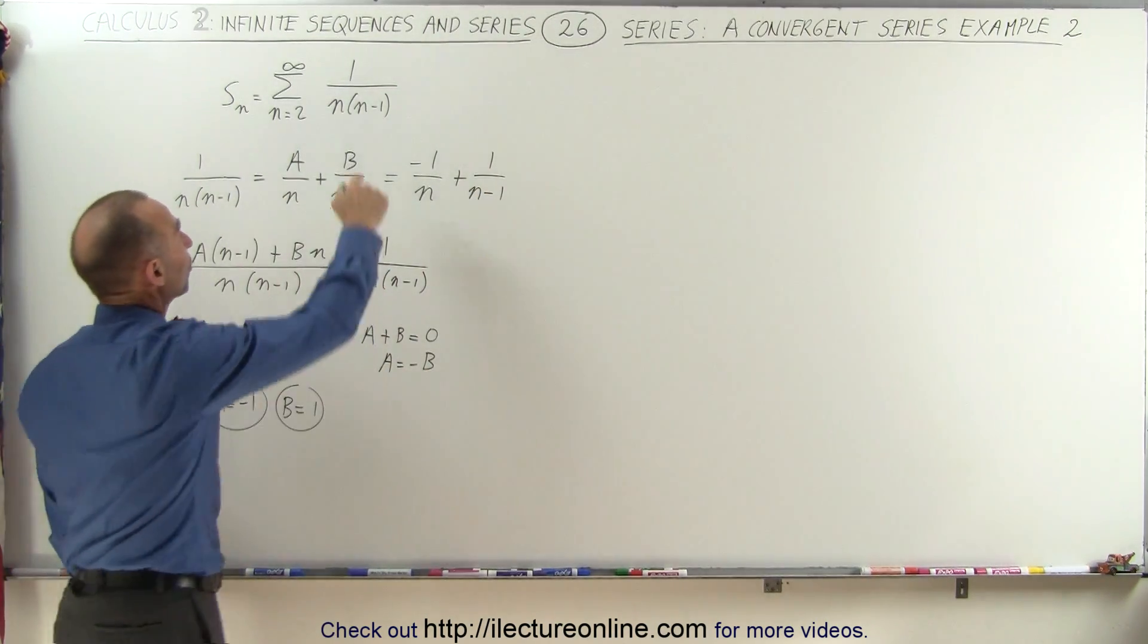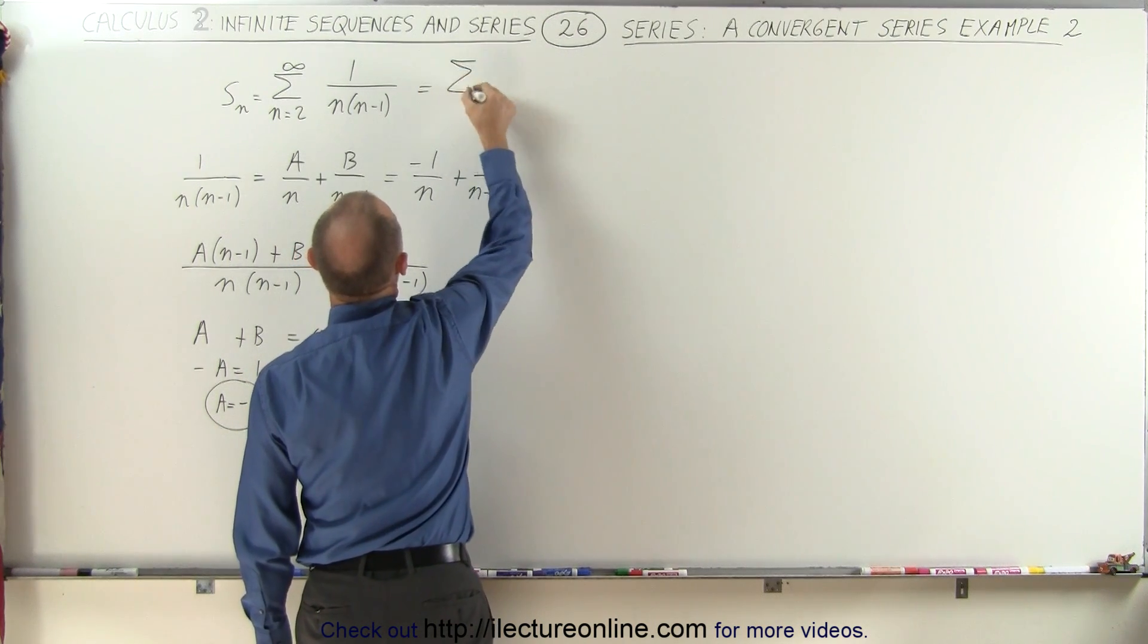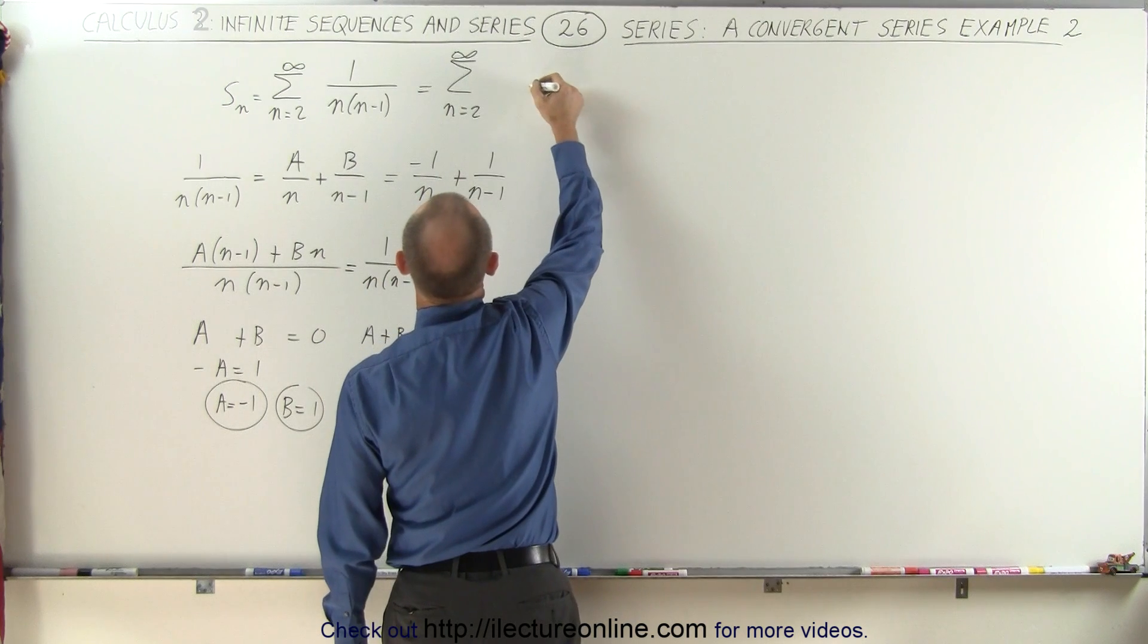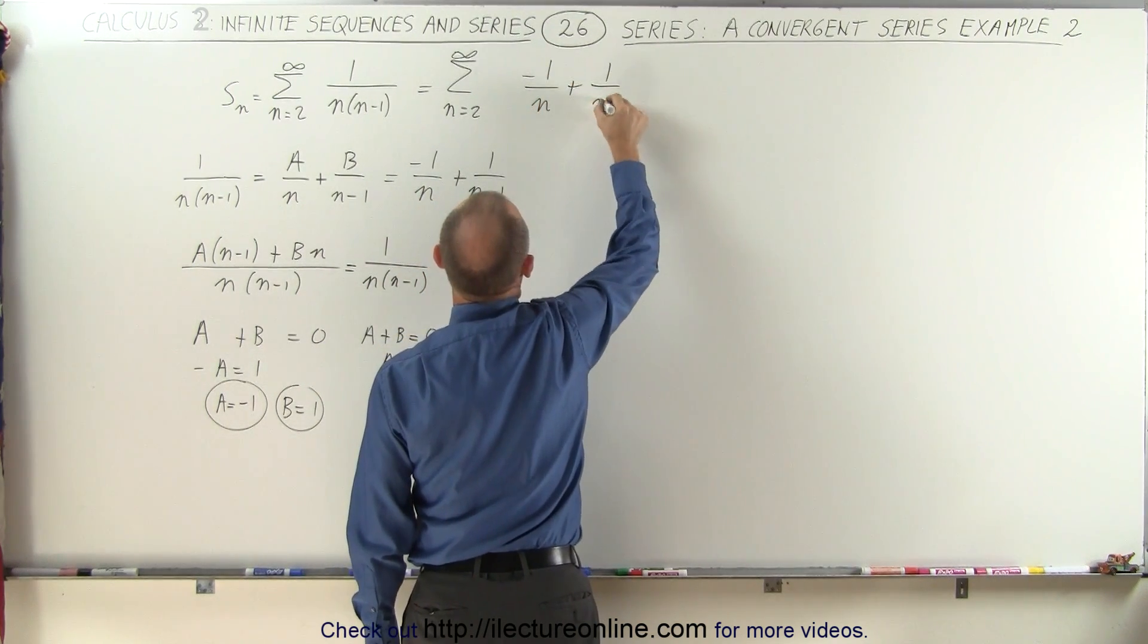So that's the partial fraction representation of this sum. This can be written as the infinite sum from n equals 2 to infinity of minus 1 over n plus 1 over n minus 1.